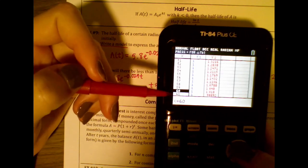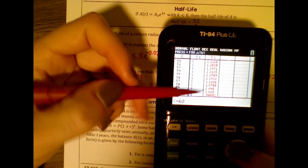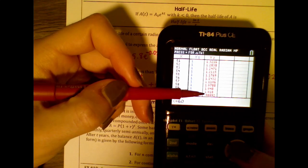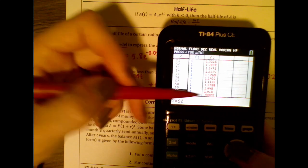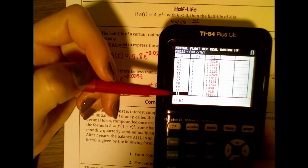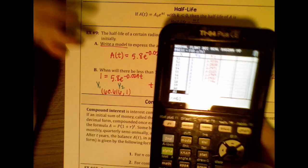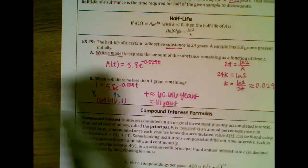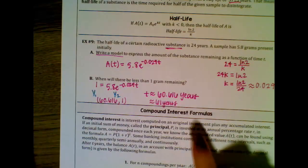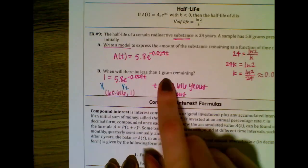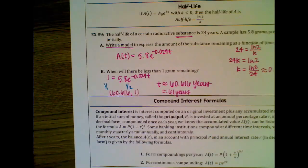Looking at the table values confirms this: at 60 years we still have just over a gram, but at 61 years we are for sure less than one gram remaining.